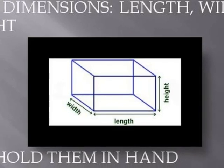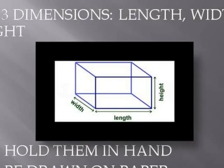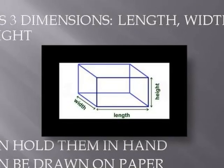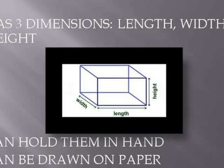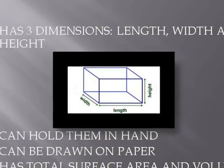3D shapes have three dimensions: length, width, and height. Since they have three dimensions, they can be held in hands and they can also be drawn on paper. 3D shapes have a total surface area and volume.